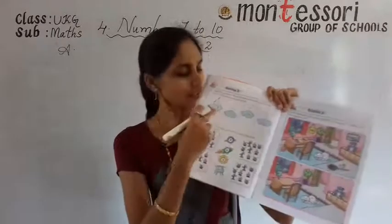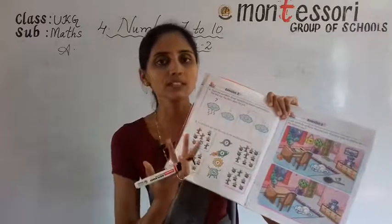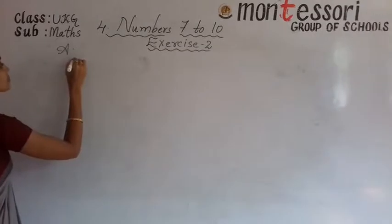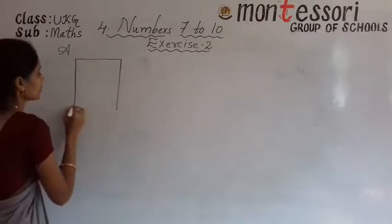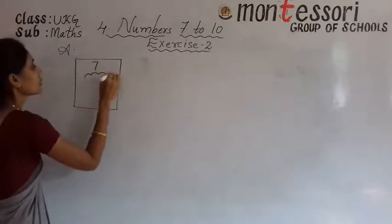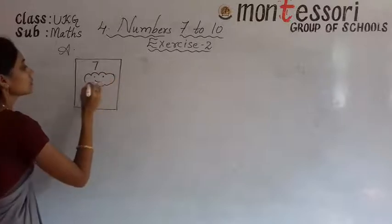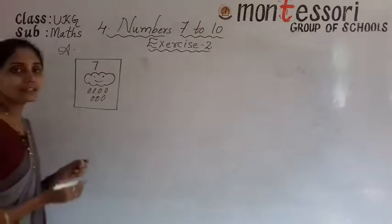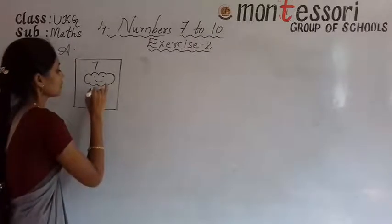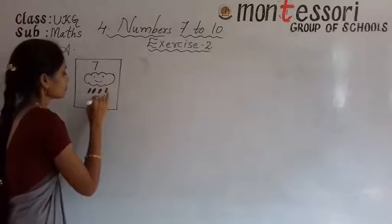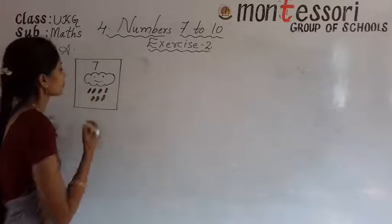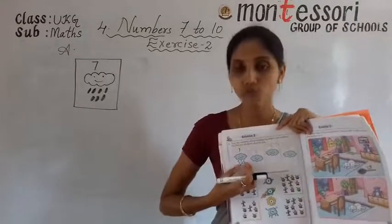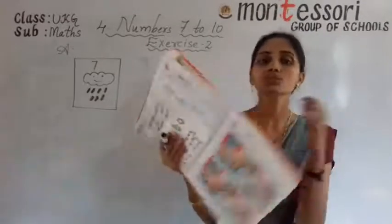What can you see? 7, clouds, raindrops. Do you know what this is? So I will explain you. My dear children, see there is a given number 7, and clouds and raindrops. Here a number is given, and according to that number we have to draw raindrops. According to the given number we have to draw the raindrops.